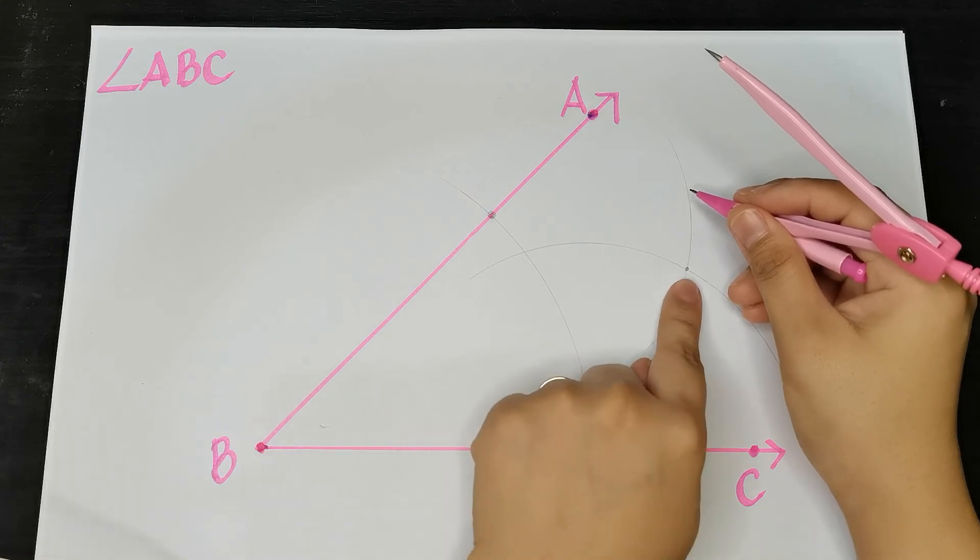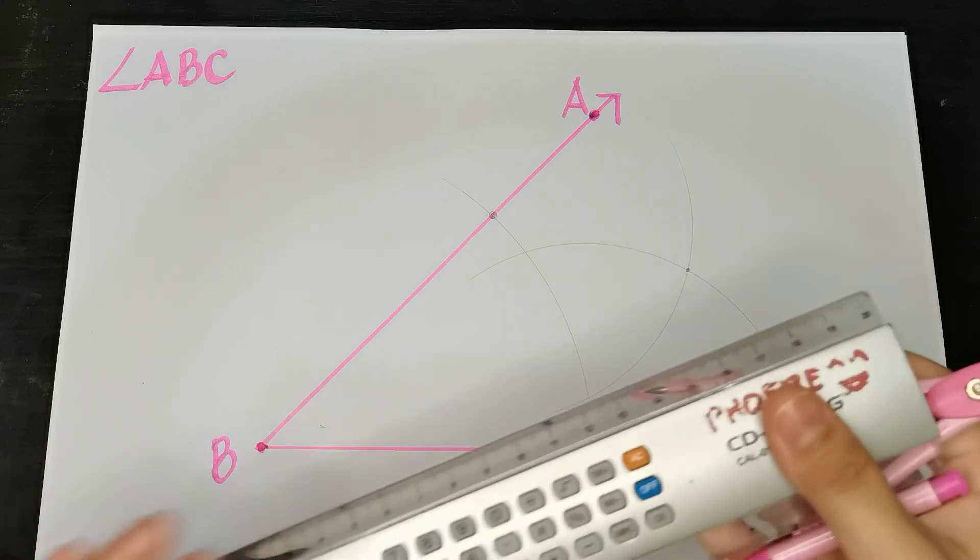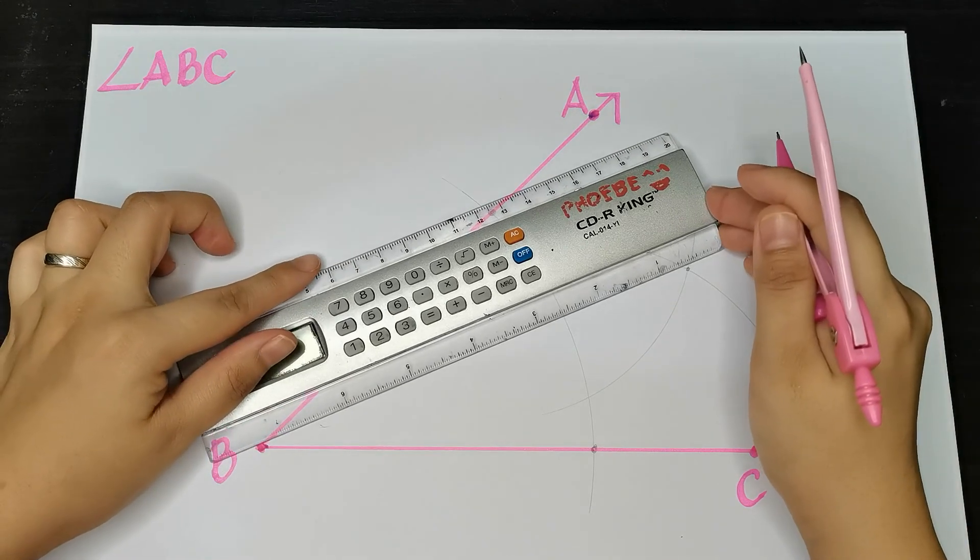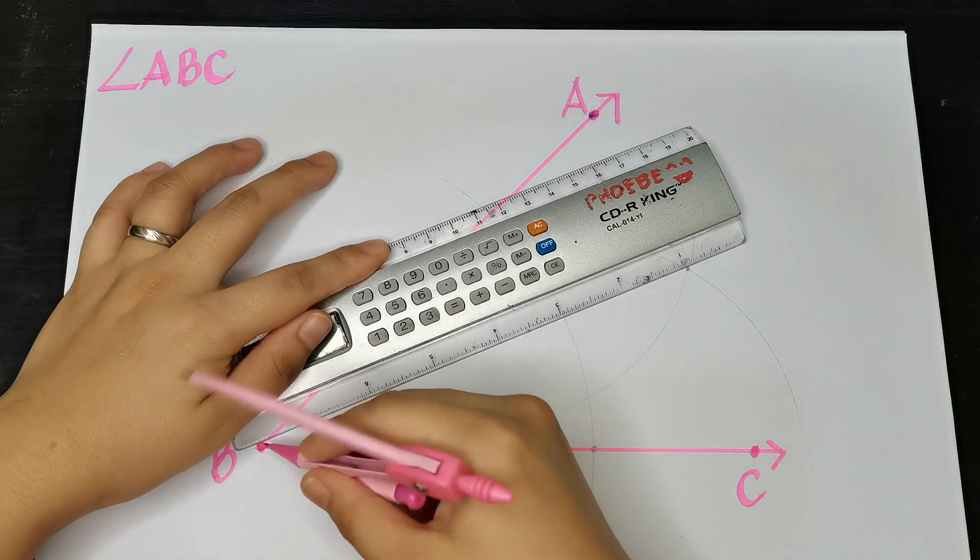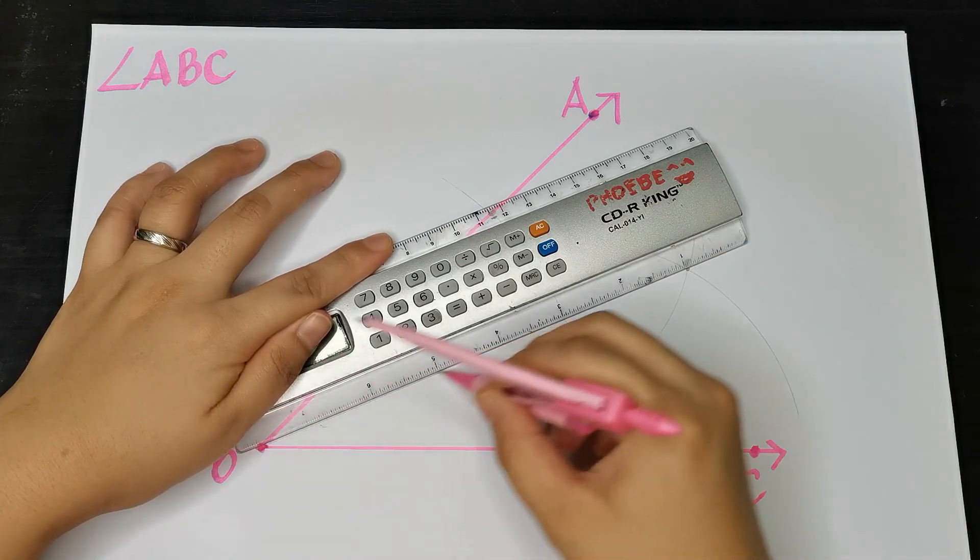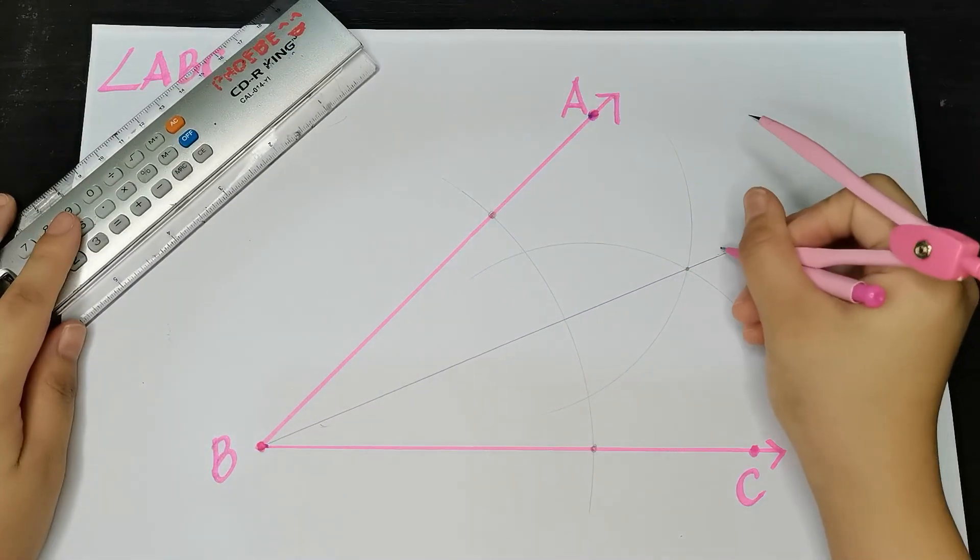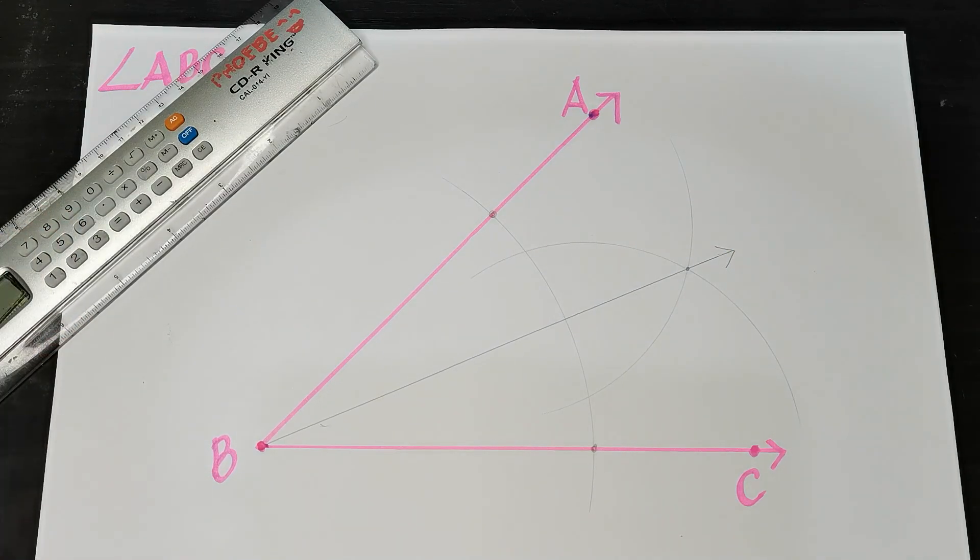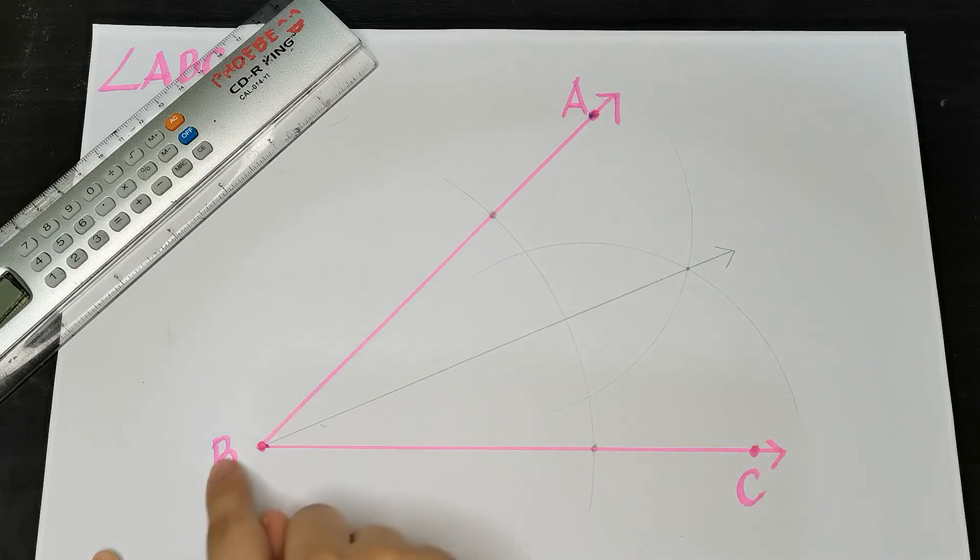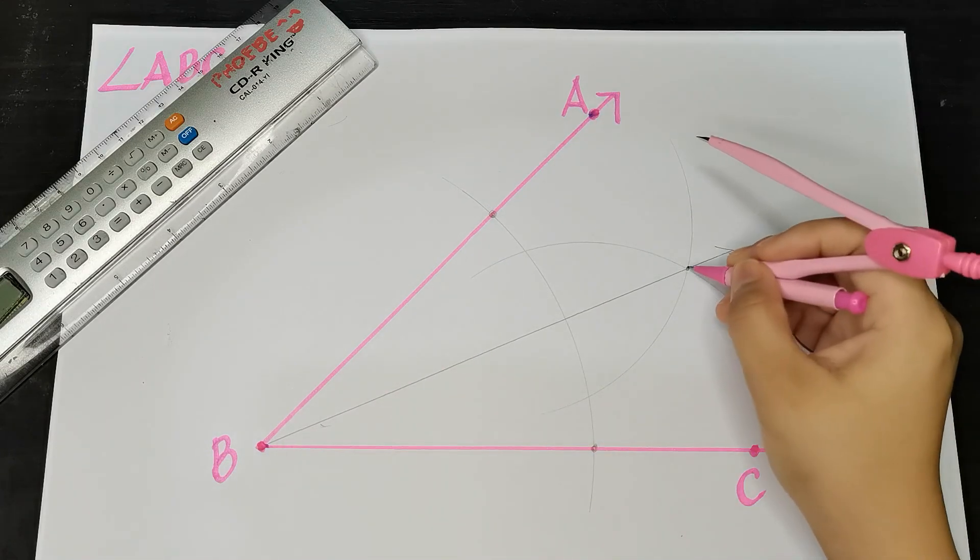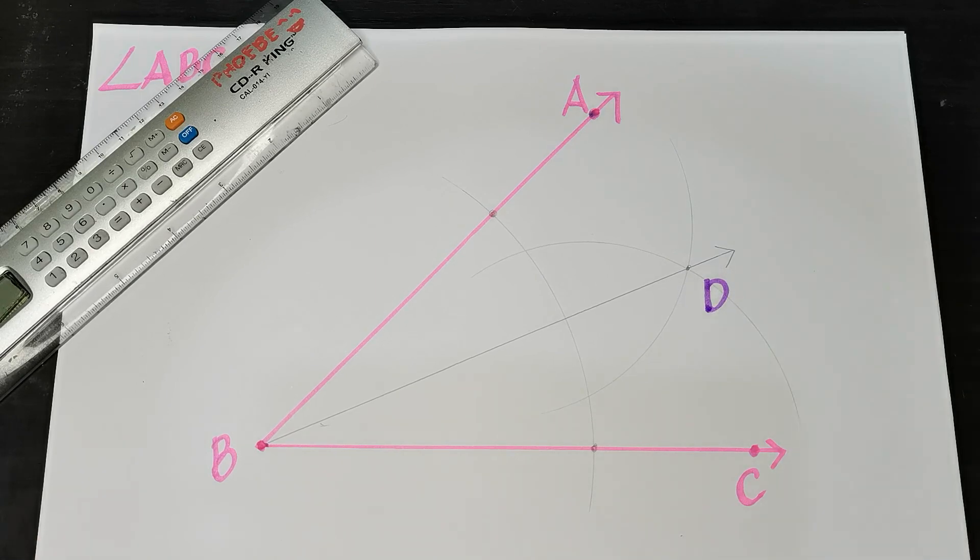Step six: connect the vertex of the angle to the point of intersection of the two small arcs. Using your straight edge, connect them. Because we're working with an angle, our drawing will be a ray.